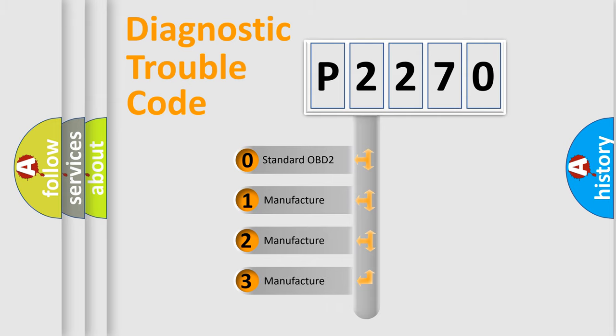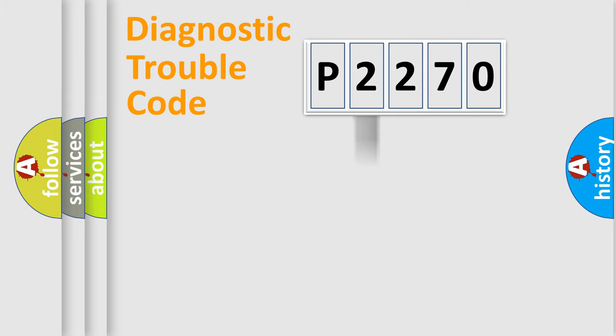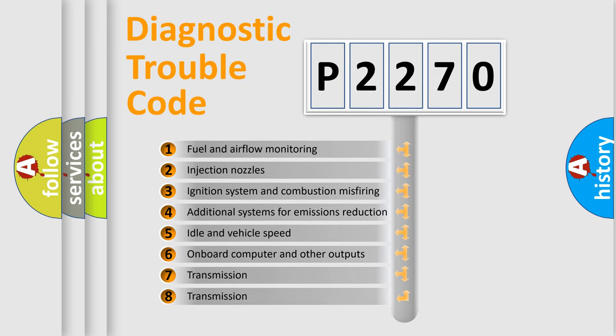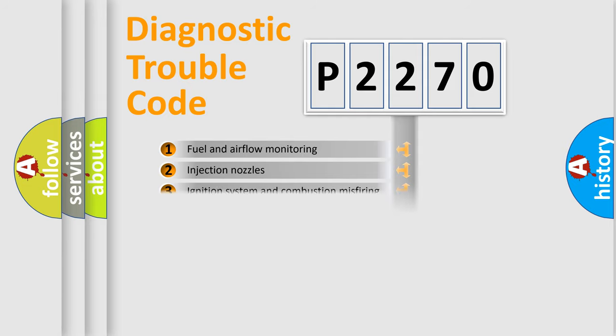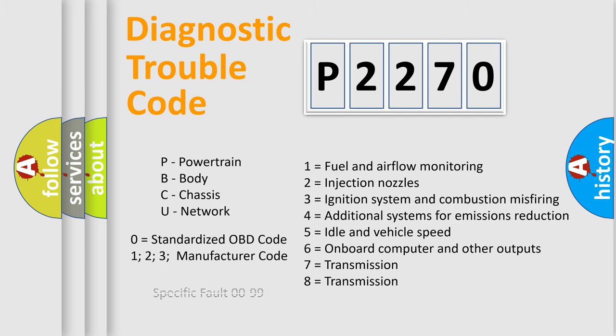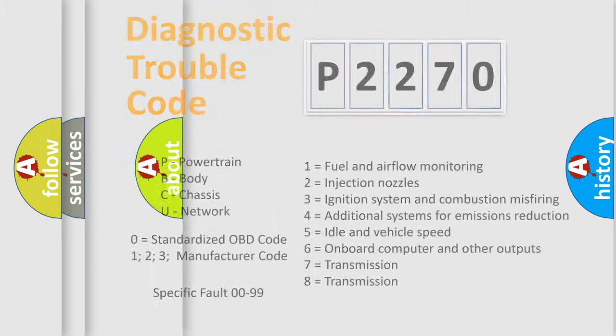If the second character is zero, it's a standardized error. Numbers 1, 2, or 3 indicate a car-specific error. The third character specifies a subset of errors. The distribution shown is valid only for standardized DTC codes. Only the last two characters define the specific fault of the group, and this division is valid only if the second character is zero.